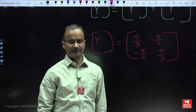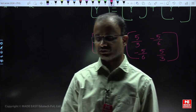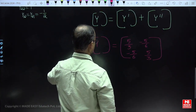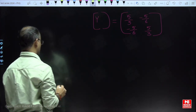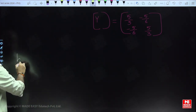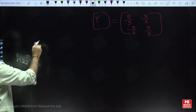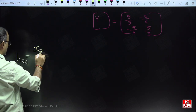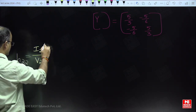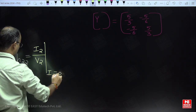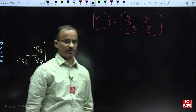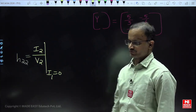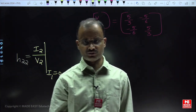The equivalent Y parameters are obtained. The question asks for the hybrid parameter H22. By the standard formula, H22 = I2/V2 with the condition I1 = 0. To find this, we can use different procedures. Let us verify two methods to conclude the answer. One approach: since all Y parameters are known, use the standard Y-parameter equations.